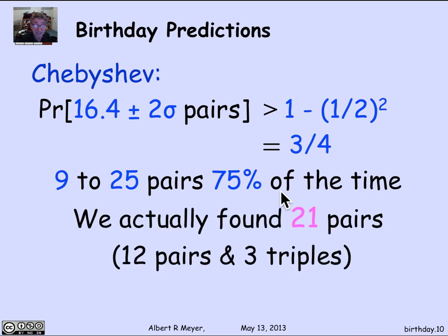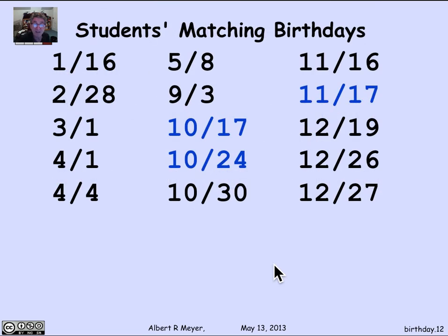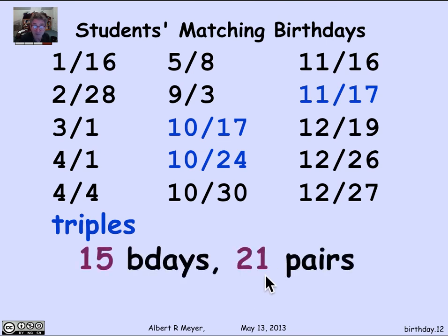Did that actually happen? It did. In our class of 110, for whom we had data, we actually found 21 pairs of matching birthdays — literally 12 pairs and three triples, but each triple counts as three matching pairs. The blues are triples, and you can see whether your birthday is among those, knowing you have a classmate or two with the same birthday. So there are 15 different birthdays that count as 21 pairs: 12 single pairs and three triplets, each of which counts for three pairs.